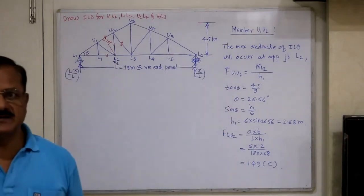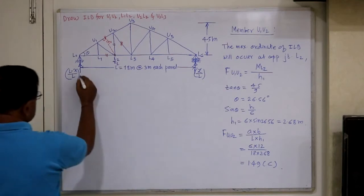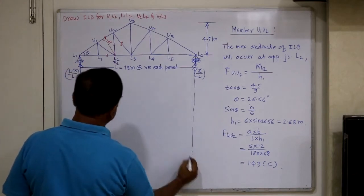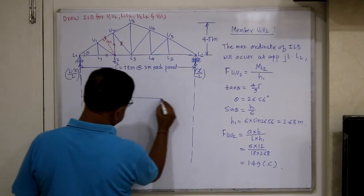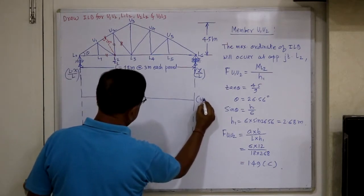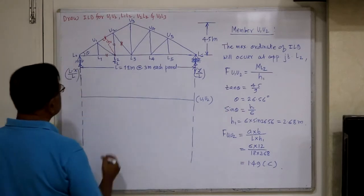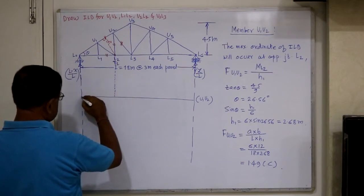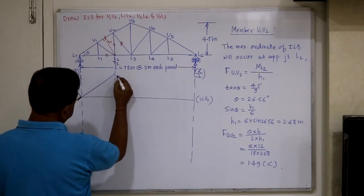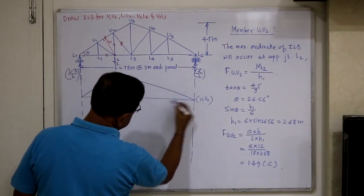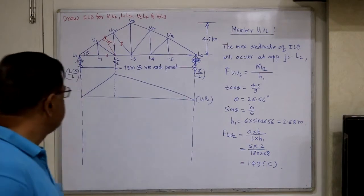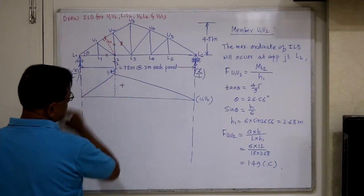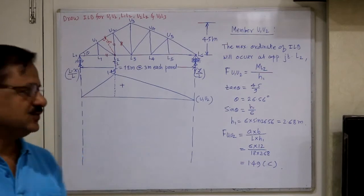Top chord members are always under compression. Now draw the influence line diagram for this member. Taking a reference line for member U1-U2, the joint is L2, so the maximum ordinate of the ILD will be under L2. The variation is linear and ordinates at the supports are zero, so it forms a triangle. The maximum ordinate is 1.49 (positive). This is the ILD for member U1-U2.